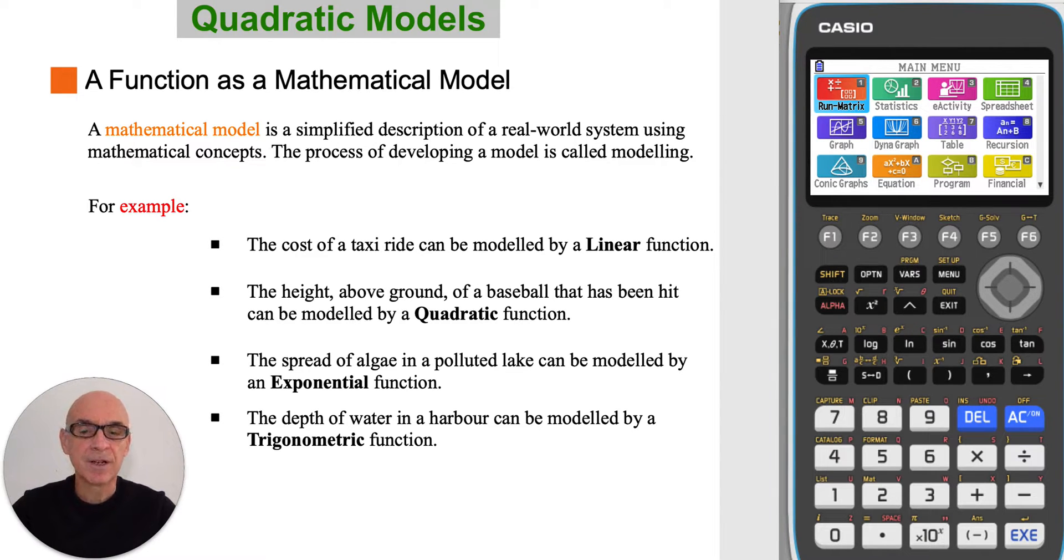For example, the height above ground of a baseball that has been hit can be modeled by a quadratic function.